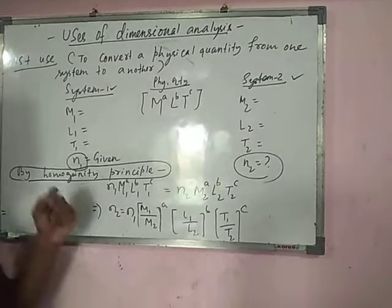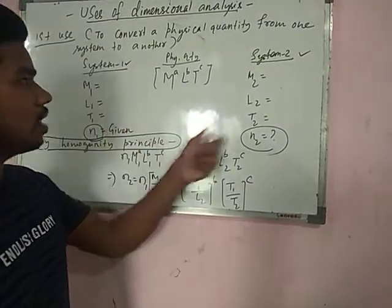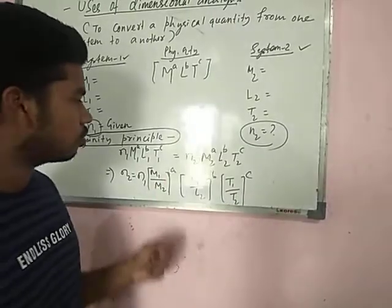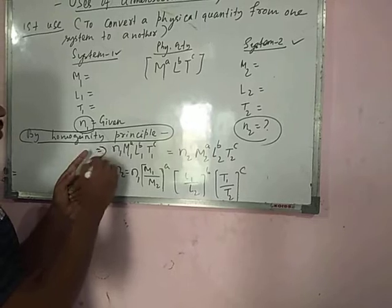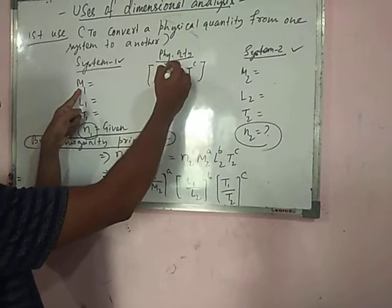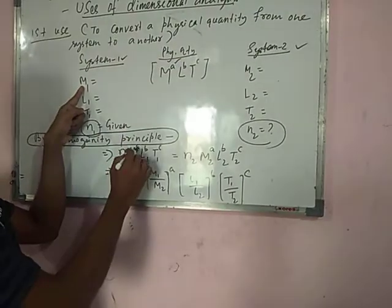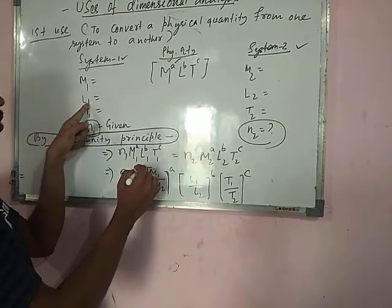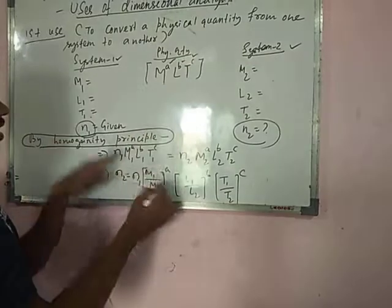We have to use the homogeneity principle. This is important. The physical quantity is equal in both systems. So we write the dimensional form as N₁M₁ᴬL₁ᴮT₁ᶜ equals N₂M₂ᴬL₂ᴮT₂ᶜ.